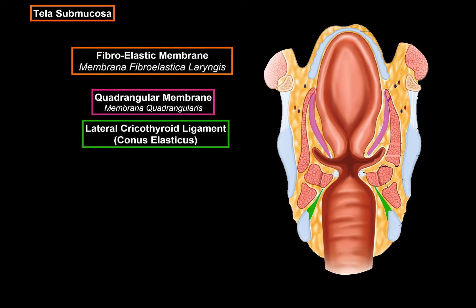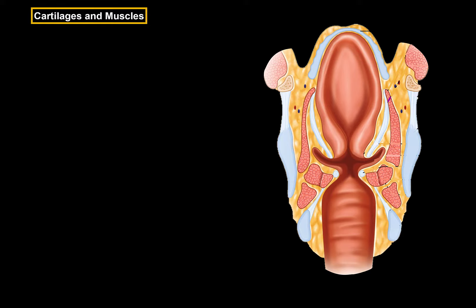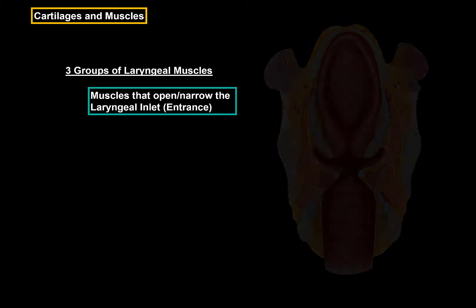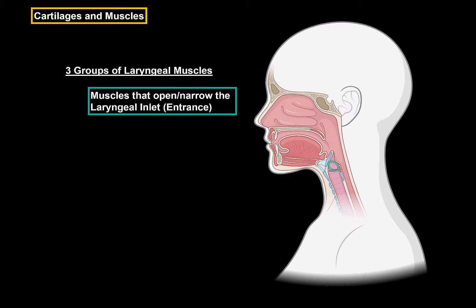So that is the tela submucosa. Next we have the cartilage and muscle layers. We've already covered the cartilages, but the muscles of the larynx are grouped according to their function. We have three groups of muscles in the larynx. The first one are the muscles that open and narrow the laryngeal inlet, or the entrance.